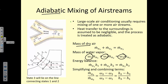On the psychrometric chart, state 3 (the mixed outlet) should lie on a line between inlet states 1 and 2. The exit temperature and specific humidity should both be between those of the two inlets. This serves as a good reality check — if your calculated outlet state doesn't fall between the inlet points on the chart, something went wrong in the calculation. Always do that verification.